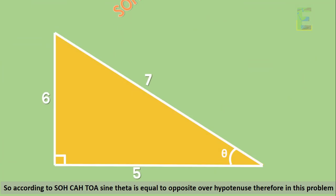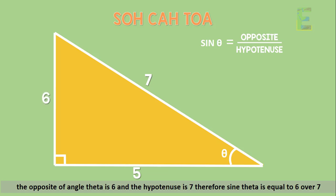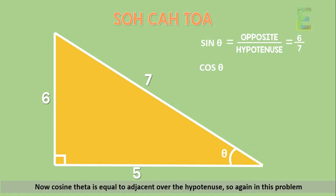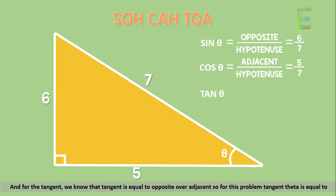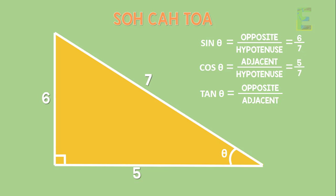Let's take a look at this right triangle. According to SOH-CAH-TOA, sine theta equals opposite over hypotenuse. In this triangle, the opposite of angle theta is 6 and the hypotenuse is 7, so sine theta equals 6 over 7. Cosine theta equals adjacent over hypotenuse; the adjacent is 5 and the hypotenuse is 7, so cosine theta equals 5 over 7. And tangent theta equals opposite over adjacent, so tangent theta equals 6 over 5.